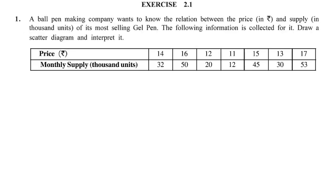Now, Exercise 2.1, which is based on drawing scatter diagrams. A ball pen company wants to know the relation between the price and monthly supply of its most selling gel pen. The data is given; draw a scatter diagram and interpret it. Price will be shown on the X-axis and monthly supply on the Y-axis.